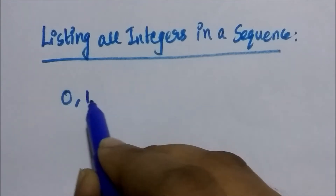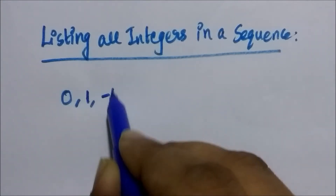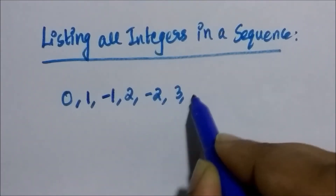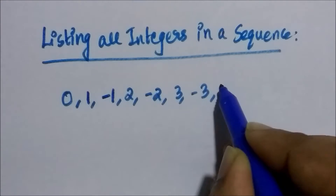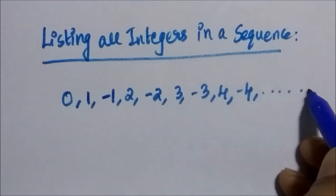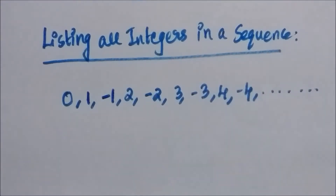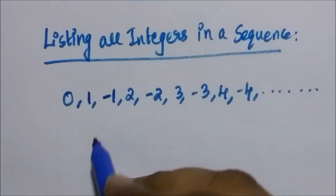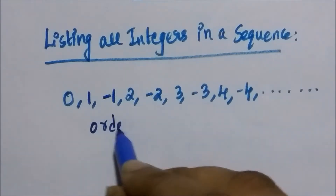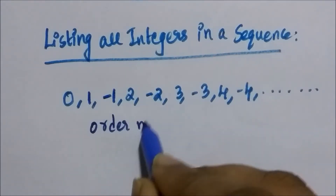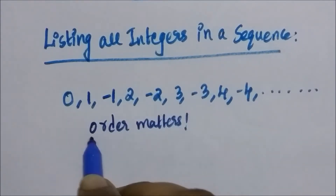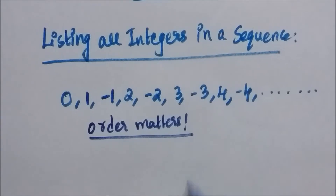Consider the sequence: 0, 1, -1, 2, -2, 3, -3, 4, -4, and so on. This is the sequence that we use for listing the integers. Now here, the order matters.